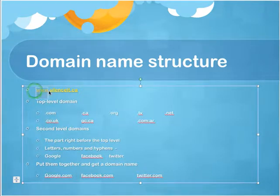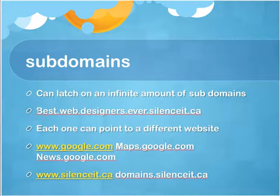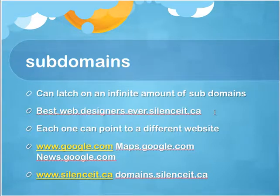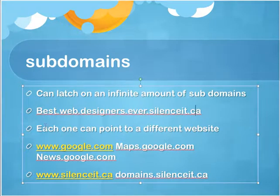There's also this 'www' I didn't touch upon yet, and that's called a sub-domain. Now, if I own a domain such as Google.com, I can latch an infinite amount of sub-domains on top. Here I've created an example: best.web.designers.ever.silenceint.ca. So silenceint.ca is the domain my company actually owns, and the 'best.web.designers.ever' part is just a series of sub-domains.